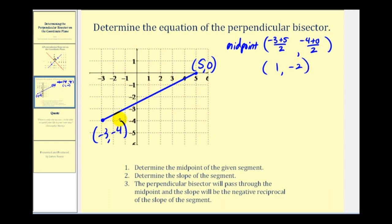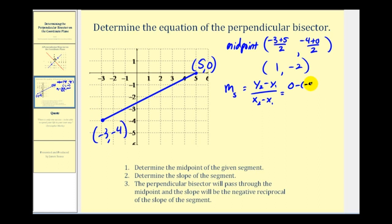The next thing we have to do is determine the slope of the segment, because the slope of the perpendicular bisector is going to be the negative reciprocal. The slope of the segment can be found using the formula: y₂ minus y₁ divided by x₂ minus x₁. Let's call the first point the ones and the second the twos. So we'll have zero minus negative four over five minus negative three, which gives us positive four over positive eight. The slope of the segment is equal to positive one-half.